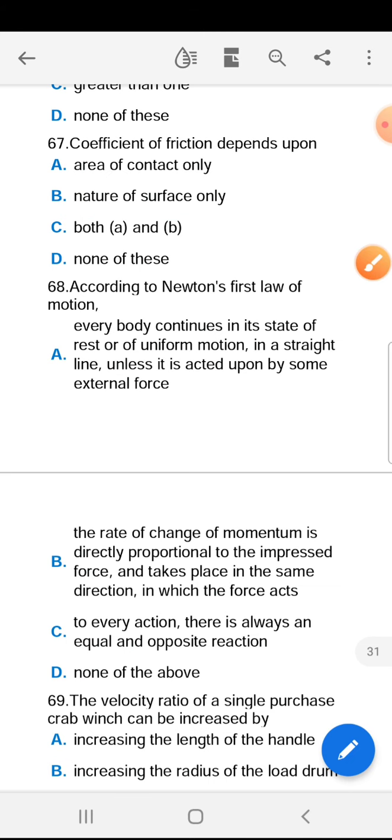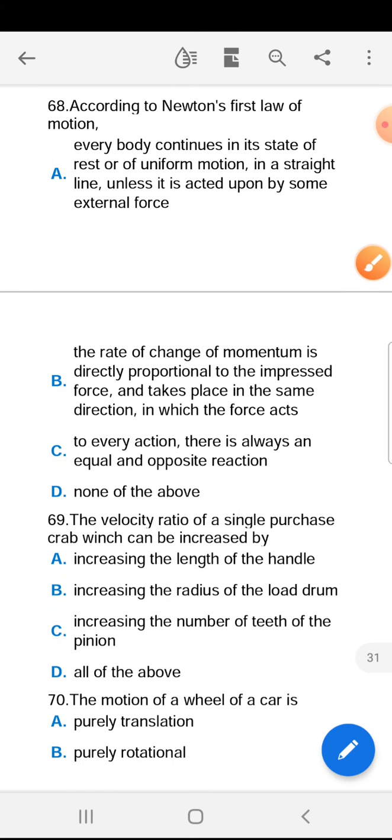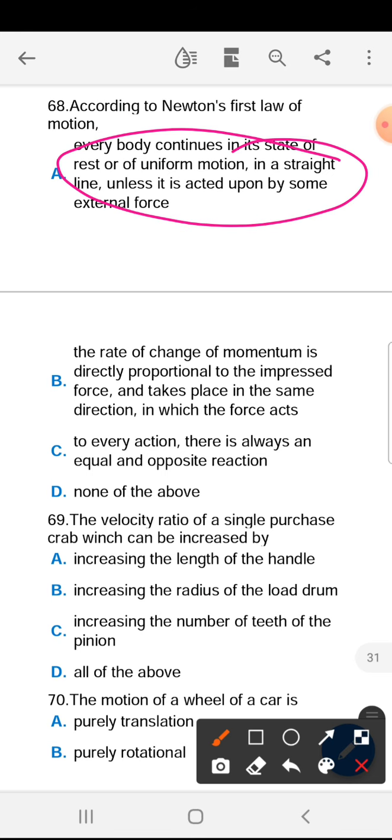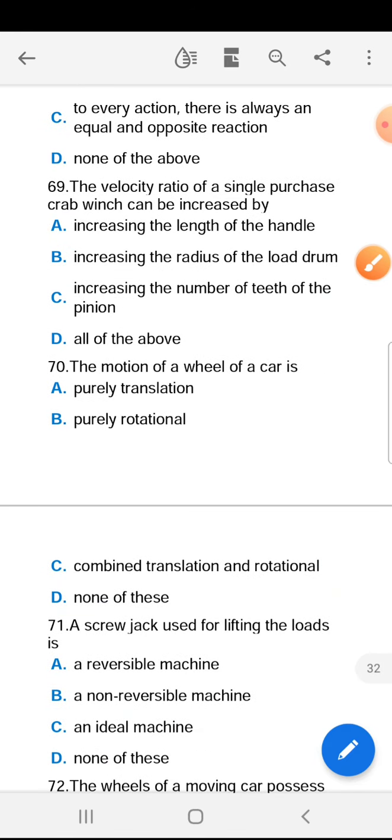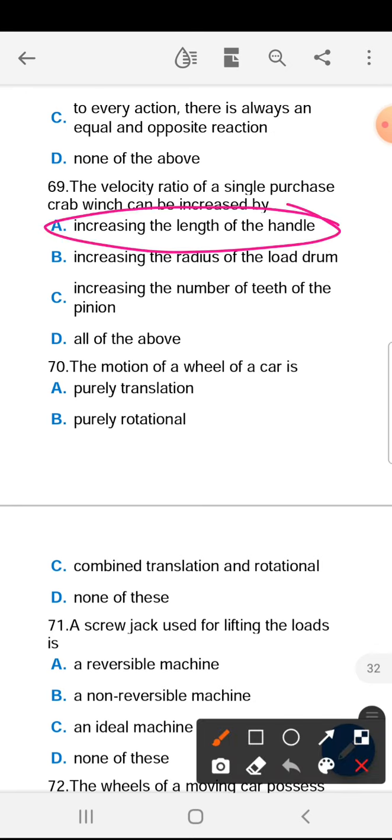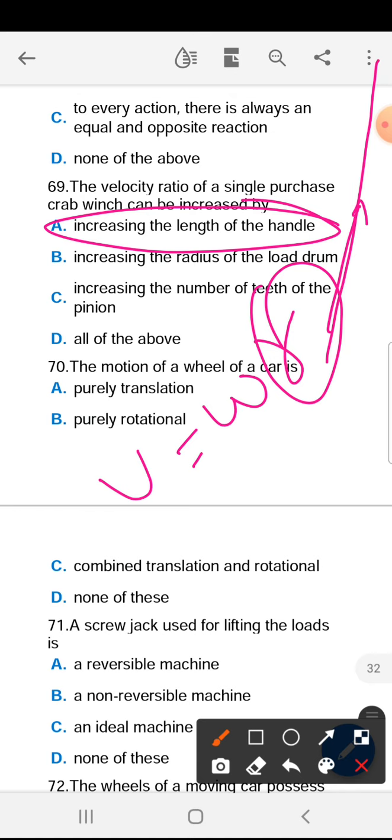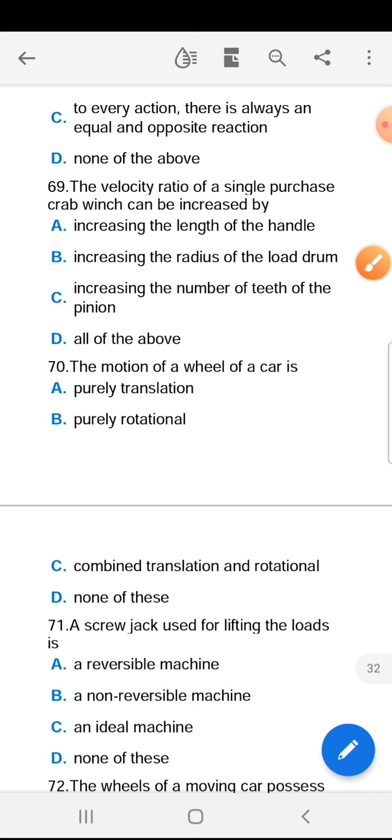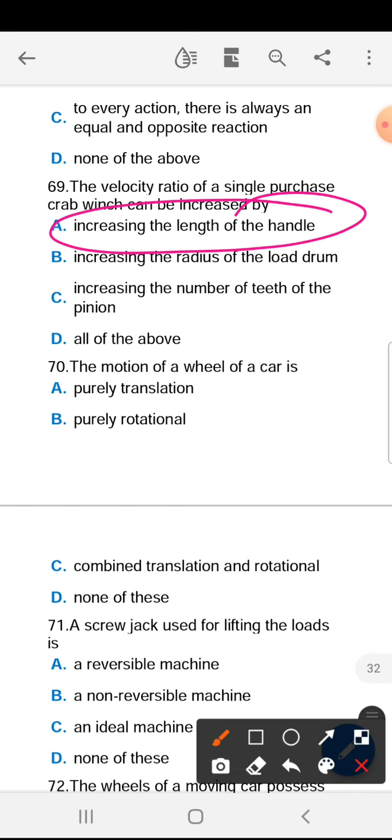Sixty-eighth is A. Sixty-ninth is C, because the velocity, we can increase V is equal to omega into R. R means it is a radial length of that rod, so it will be increased. When the length increases, then velocity increases. So the answer is increase the length of handle.